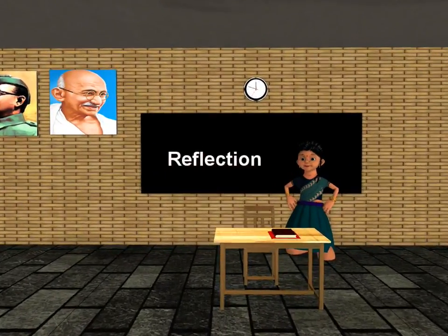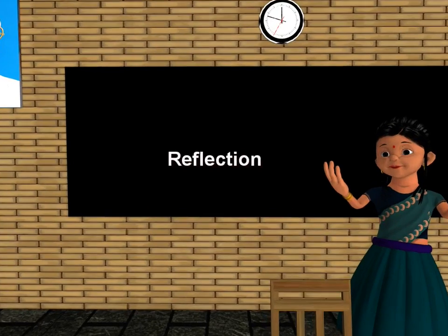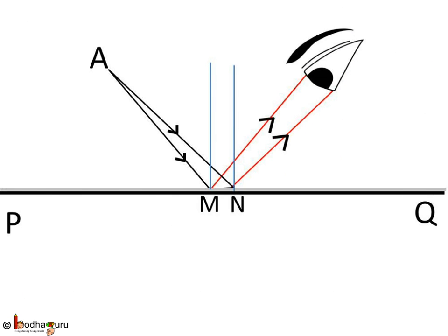Good morning children. Now we know about the laws of reflection, so let us revise how reflection is formed. Here there is an object in front of the mirror. Let's look into just one point of that object.